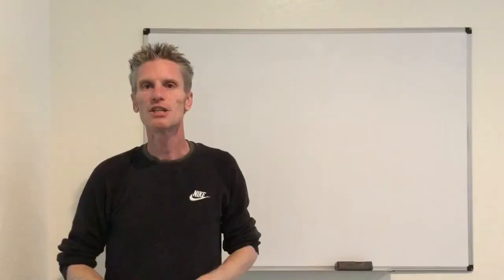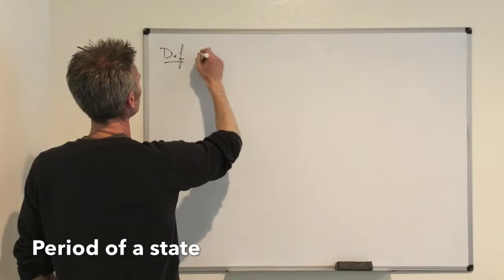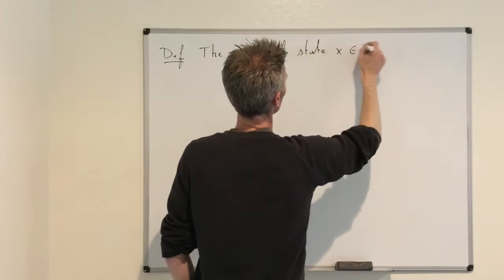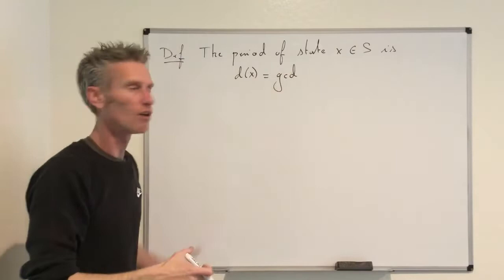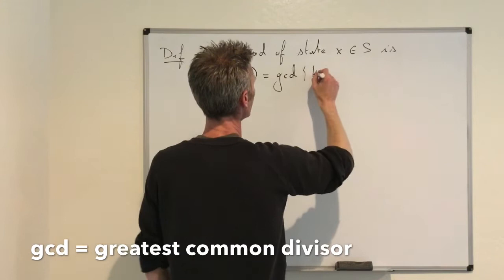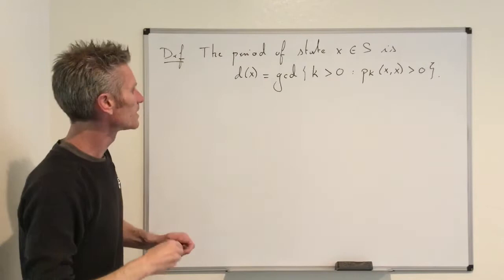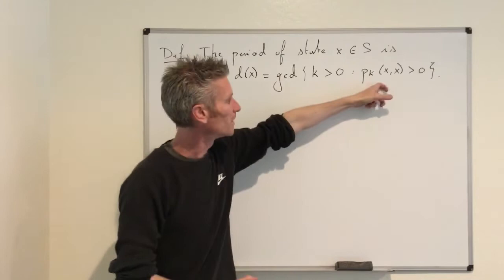Let us define the notion of the period of a state. The period of a state x in the state space, which we denote d(x), is defined as the greatest common divisor (GCD) of all strictly positive integers k such that p^k(x,x) is strictly positive. Concretely, to find the period of a state, you want to use the directed graph representation rather than the transition matrix.